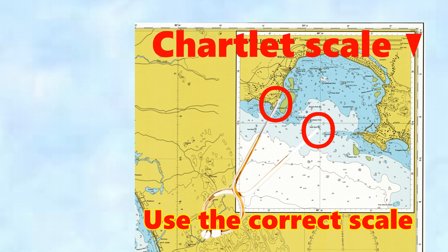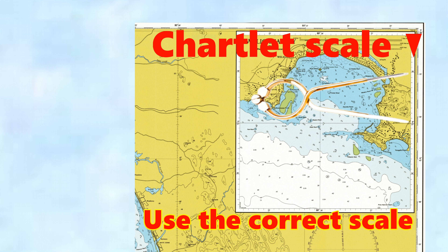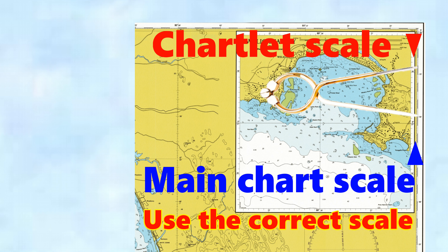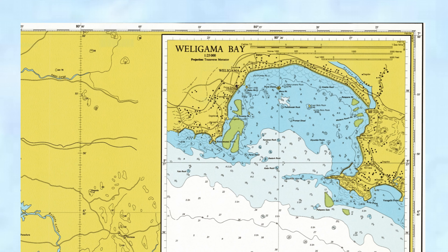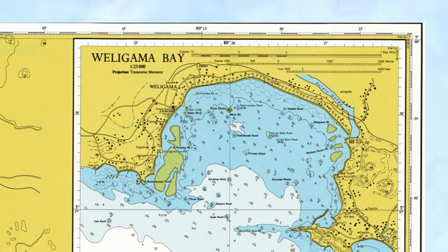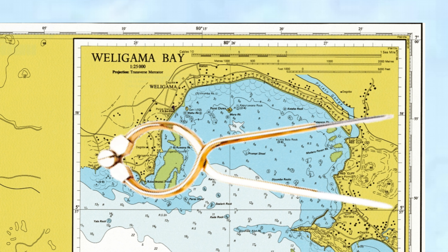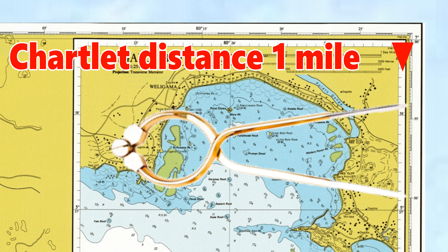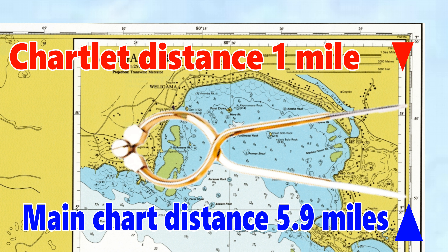Something else to be careful of: when you have a chart within a chart — a chartlet — you must use the right scale, because there are two latitude scales side by side. One is the chartlet scale and one is the main chart scale. When we measured on the actual chartlet — the smaller chart — we need to use the chartlet scale here. That gives roughly one mile. But if we go over to the main chart scale, all of a sudden it becomes 5.9 miles.